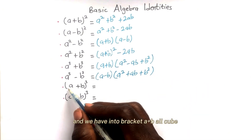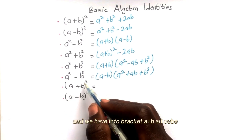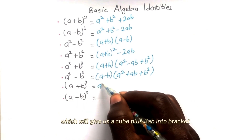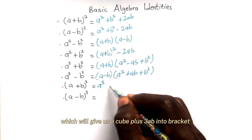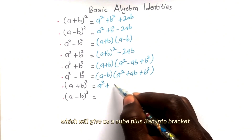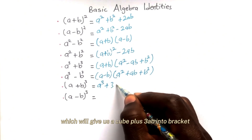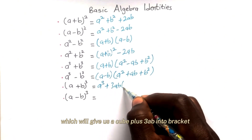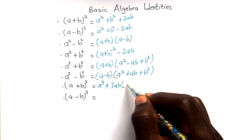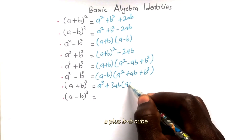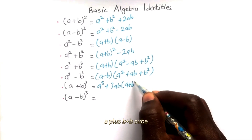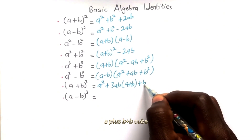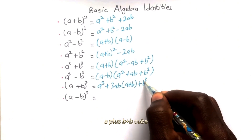(a plus b) cubed will give us a cubed plus 3ab into (a plus b) plus b cubed.